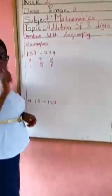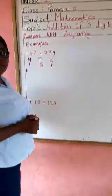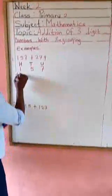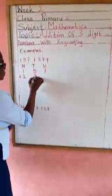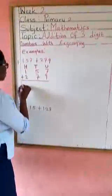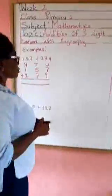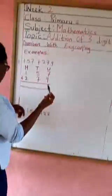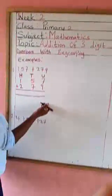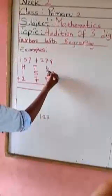Now remember we must put a plus sign to show that we are doing addition. So plus 279. Then let us move. So we are going to add up now. Let's count. 7 plus 9. You can use down here to count.